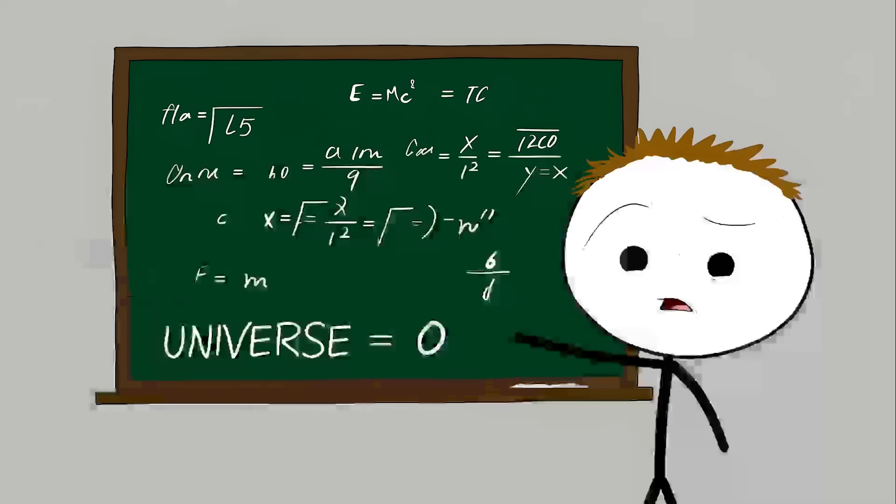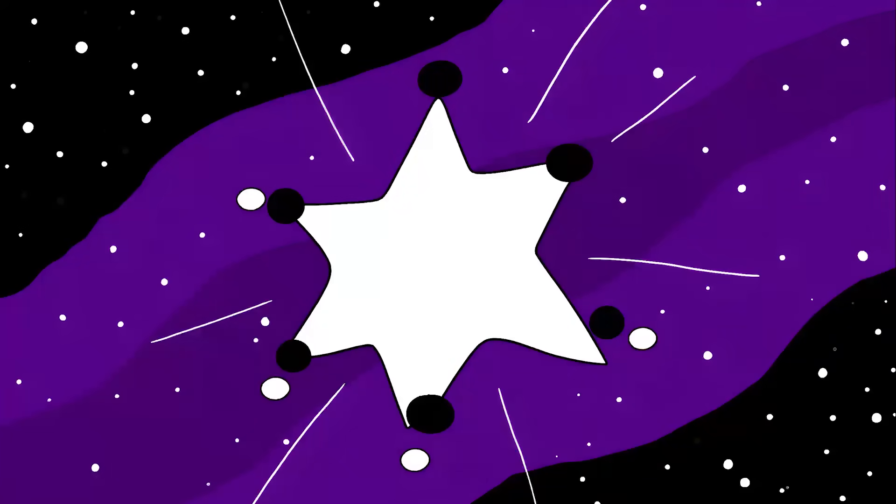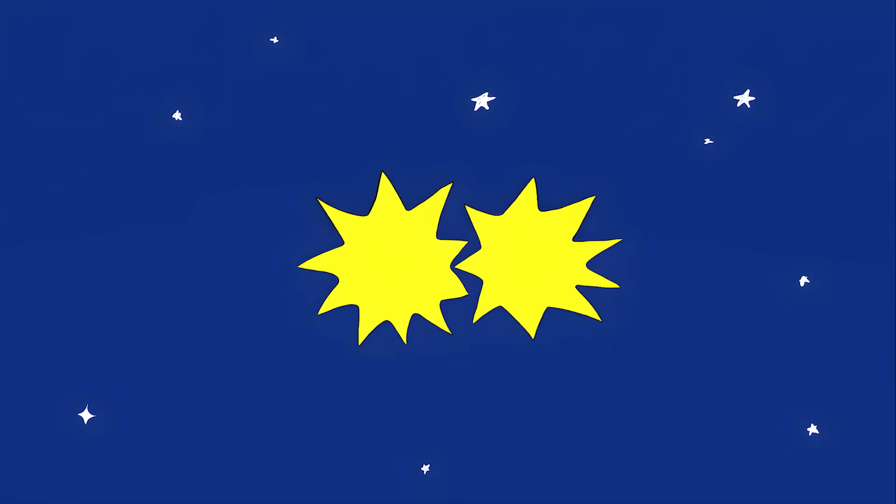Let's get right into it. Number seven: the universe's accounting error. According to physics, you, me, this planet, and everything we see shouldn't be here. When the universe was born, it made matter and antimatter in equal amounts. Whenever matter and antimatter meet, they destroy each other completely, leaving nothing but pure energy.